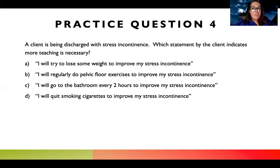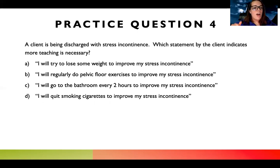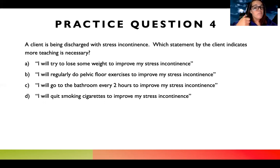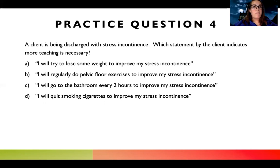First answer: 'I will try to lose some weight to improve my stress incontinence.' Weight loss is generally a good thing, and if stress incontinence sounds like something related to pressure, then weight loss seems like something I would want them to do. Choice B: 'I will regularly do pelvic floor exercises to improve my stress incontinence.' My teacher said a whole bunch of stuff about kegels and strengthening muscles. If the problem is a weak muscle with stress incontinence, pelvic floor exercises are probably good. Choice D: 'I will quit smoking cigarettes to improve my stress incontinence.' Cigarettes seem to be bad for everything, and I've never seen a question where cigarettes was not a bad thing — so that sounds like something I'd want them to do. That leaves me with C.